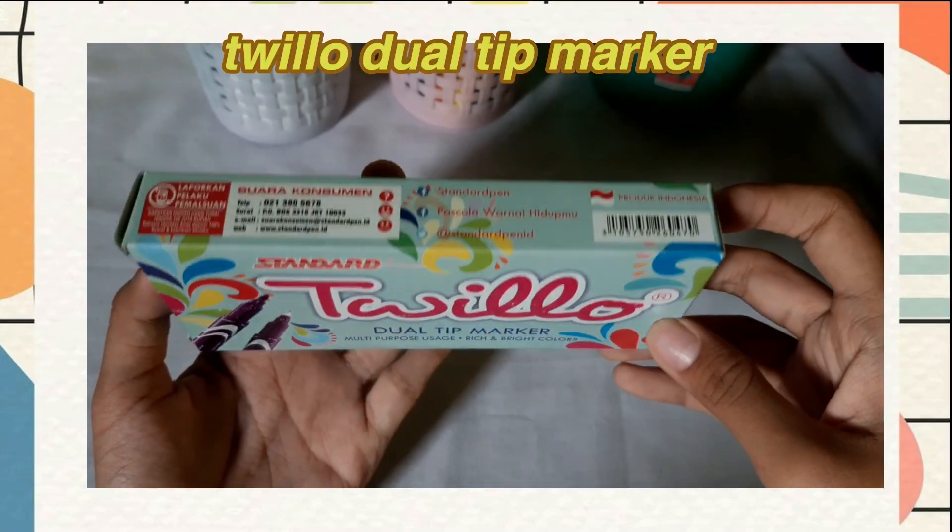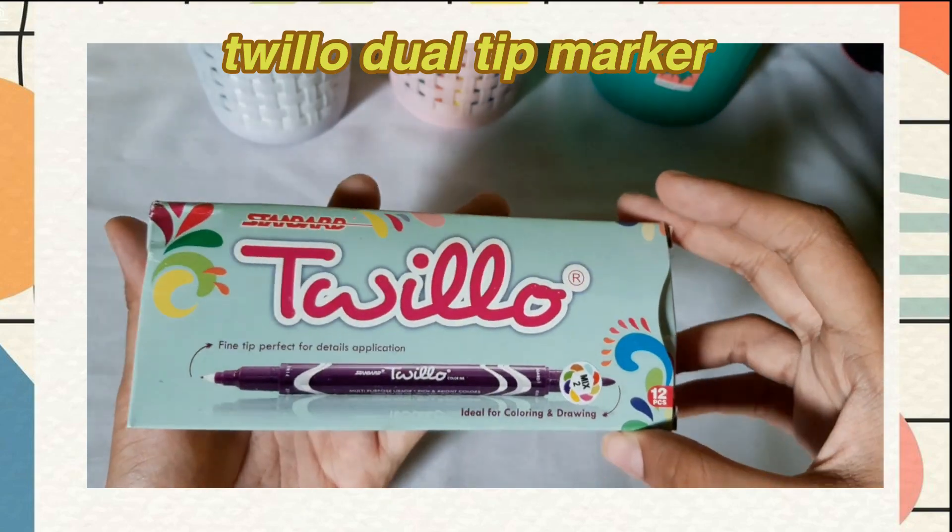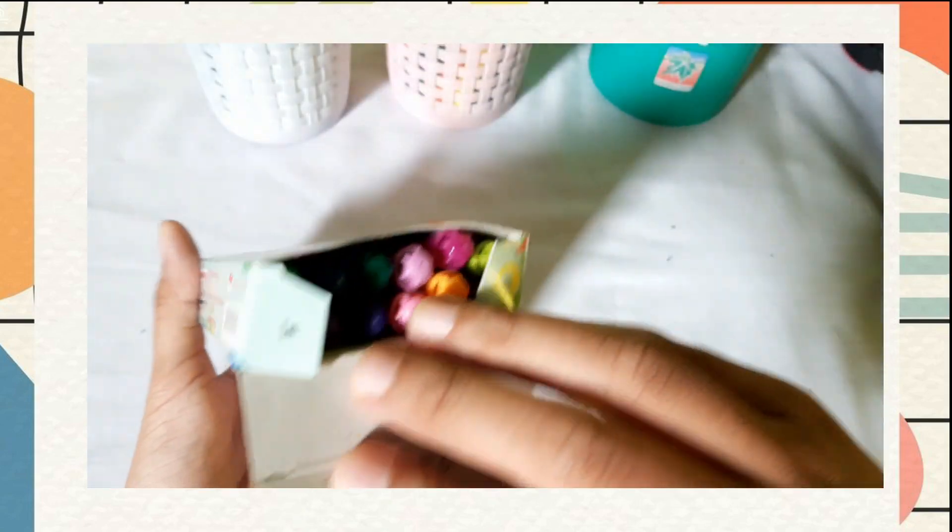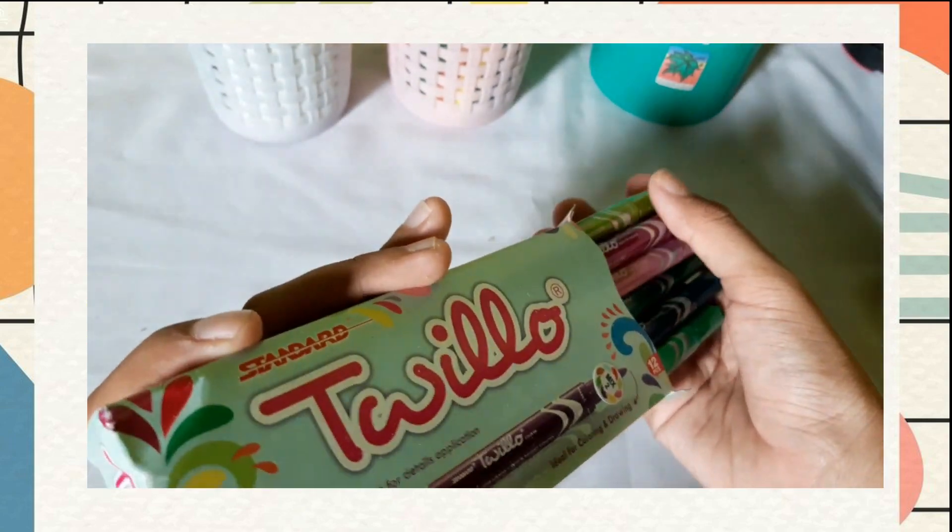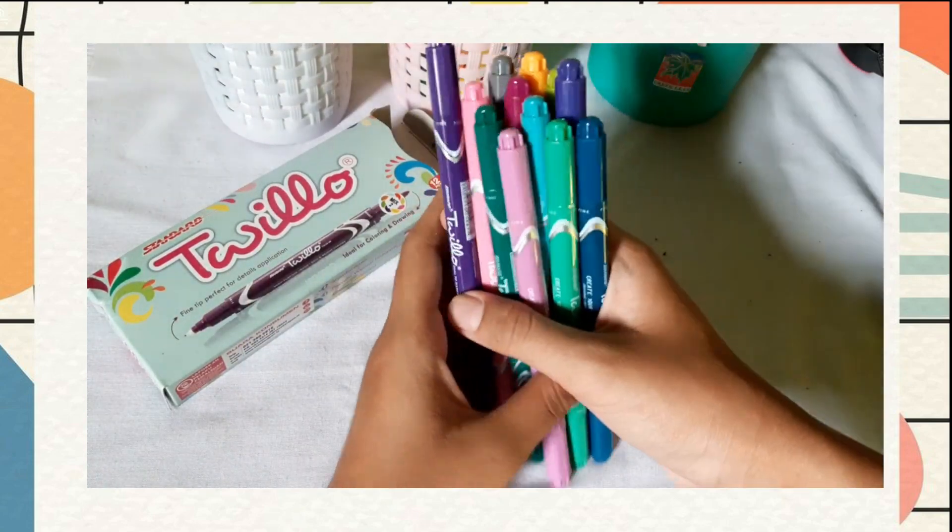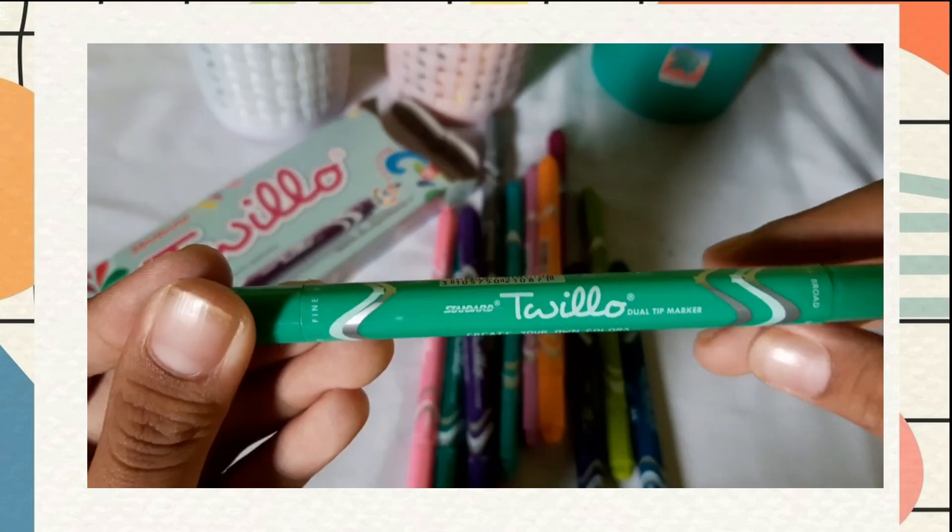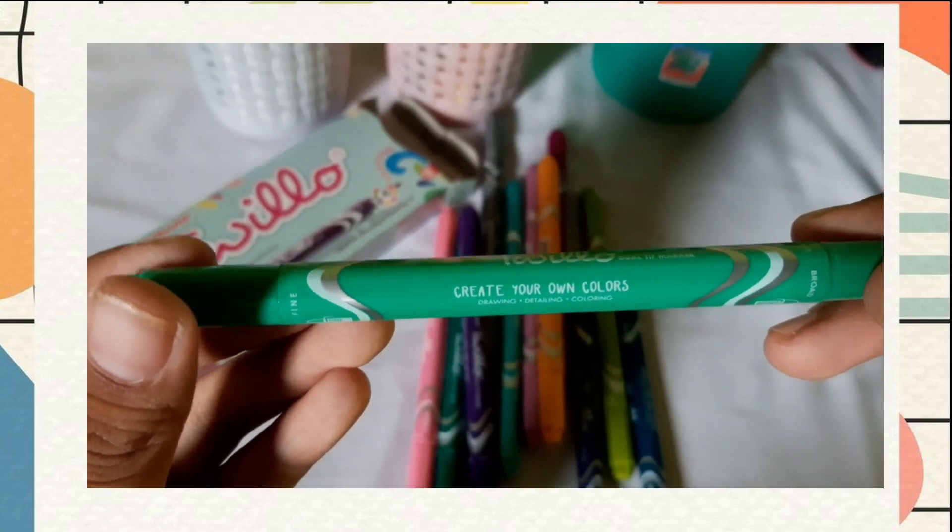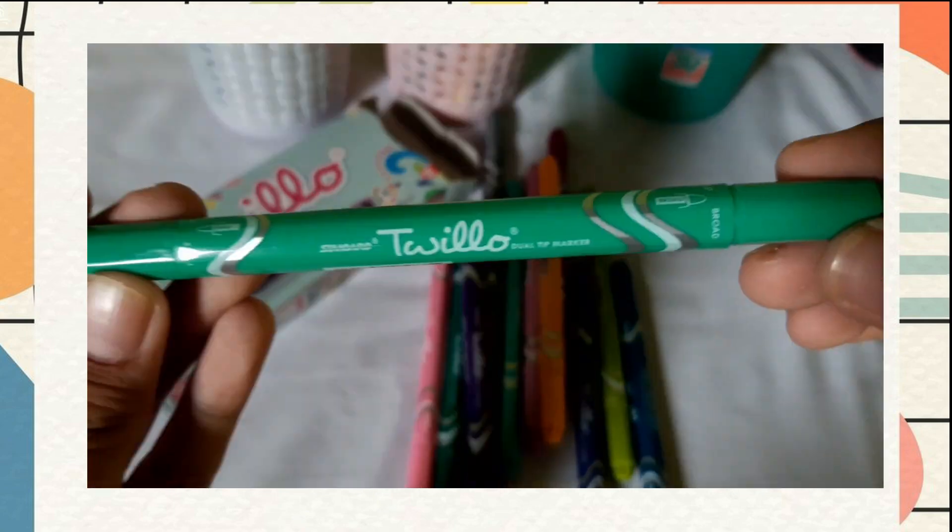Sekarang move ke yang relate sama warna-warni. Kali ini ada Twilo Dual Tip Marker. Isinya ada 12 warna yang berbeda. Sebenarnya Twilo tuh masih punya banyak warna lagi selain ini, tapi kali ini aku dikirimin warna yang seperti kalian lihat sekarang. Desainnya unik banget, berbeda dari marker yang biasanya.